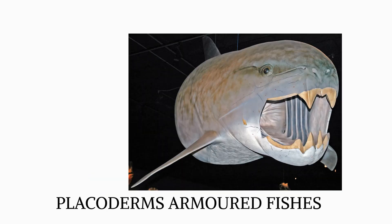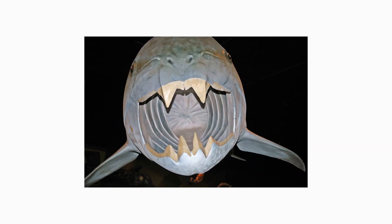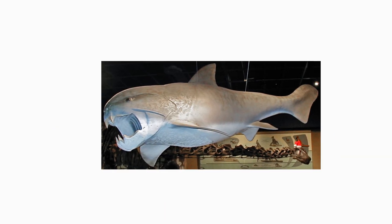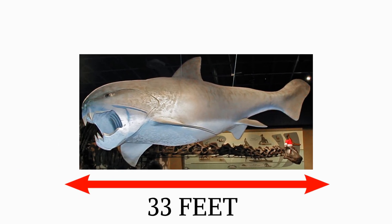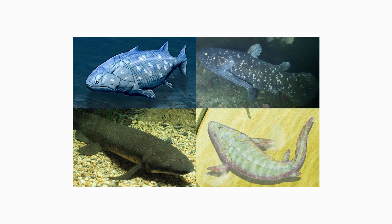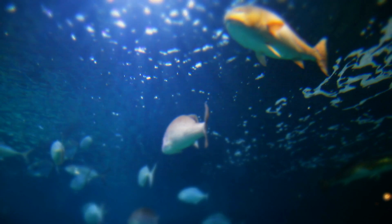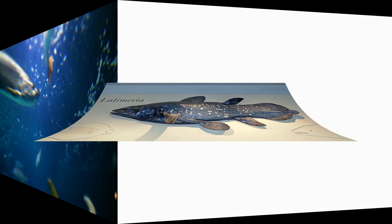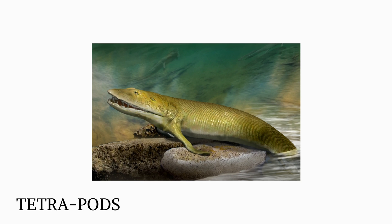Placoderms, armored fishes, evolved as the dominating marine predators after extensive diversity. They lacked real teeth and had rudimentary jaws; instead, they had bony features in their jaws that were employed to crush or shear prey. Placoderms might grow to be 33 feet, that is 10 meters, long. During this period, lobe-finned fish were more numerous than ray fins, but they essentially died out. Today, only the coelacanth and a few species of lungfish have lobe-finned fins. Lobe-finned fishes possessed fleshy pectoral and pelvic fins that articulated with the shoulder or pelvis via a single bone, either humerus or femur, driven by muscles within the fin. Some creatures have spiracles in their skulls that allow them to breathe. All tetrapods are thought to have descended from lobe-finned fishes.